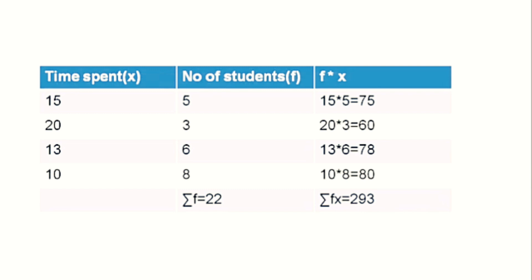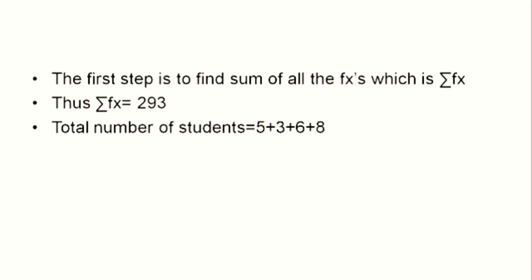Next, we count the total number of students: sigma f = 22. All the fx products are summed to find sigma fx = 293. Mean is calculated by the formula: mean = sigma fx / sigma f = 293 / 22 = 13.62.